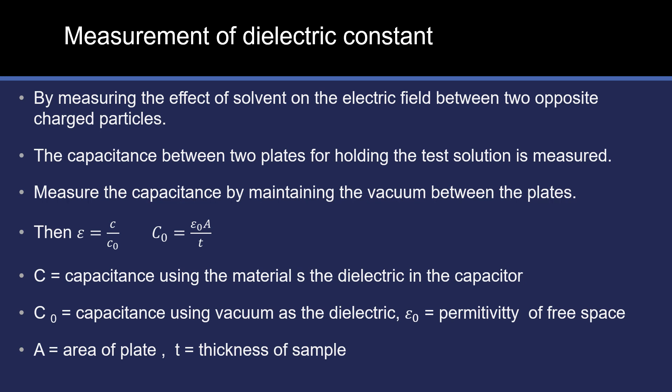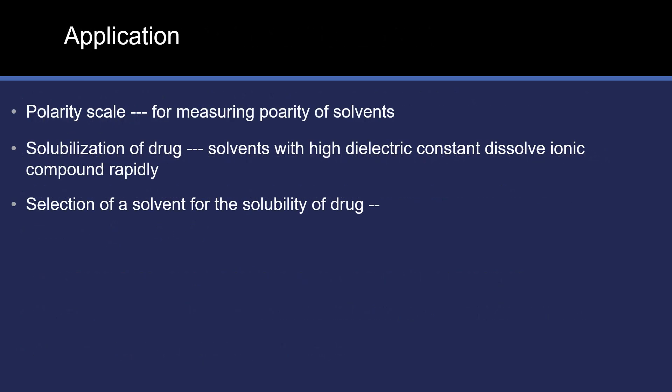C is equal to Epsilon0 times A divided by T. A is the area of the plate. Epsilon0 is the permittivity of the medium. T is the thickness of the sample — this is for measurement of the dielectric constant. Then the application: the main application is used in determining polarity.